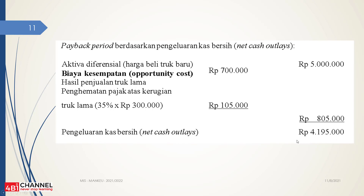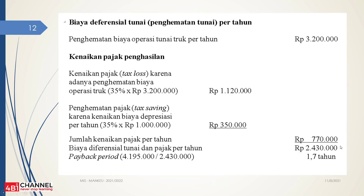Ketika kita sudah hitung tersebut, kita dapatkan net cash-nya Rp4.950.000. Kemudian kita lanjut perhitungannya — ini sudah konstanta. Ketika kita masukkan ke rumus, ternyata payback period-nya itu 1,7 tahun. Artinya dalam 1,7 tahun itu sudah bisa BEP. Jadi aktiva yang kita investasikan itu bisa menghasilkan keuntungan dalam 1 tahun 7 bulan.